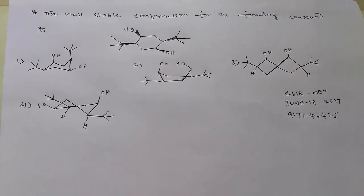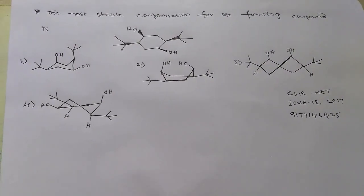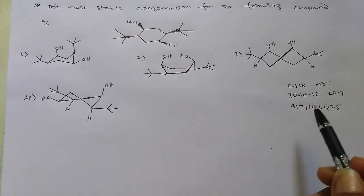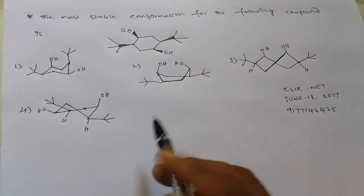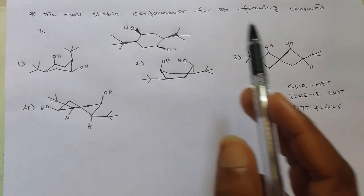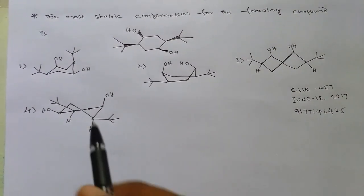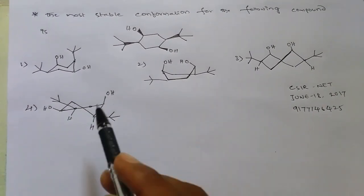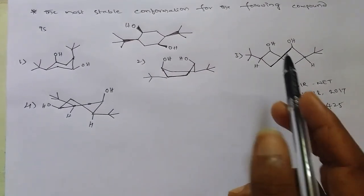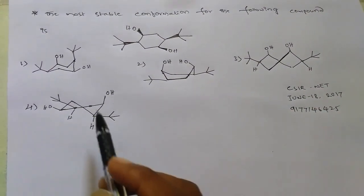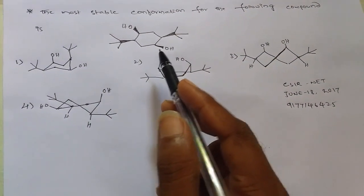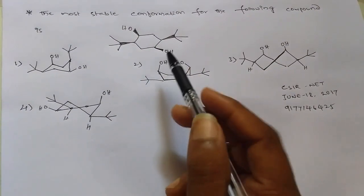Hi, this is your game master. This question appeared in CSIR NET June 18, 2017. The question asks for the most stable conformation for the given compound. We have four options: chair form, boat form, twisted boat, and half chair. We need to identify the most stable conformation for this given structure.